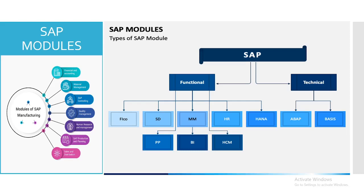In the technical category we have SAP ABAP, Basis, Network, etc. In the functional category we have FICO, SD, MM, HR, HANA, PP, BI, HCM, and other different types of modules available in SAP.